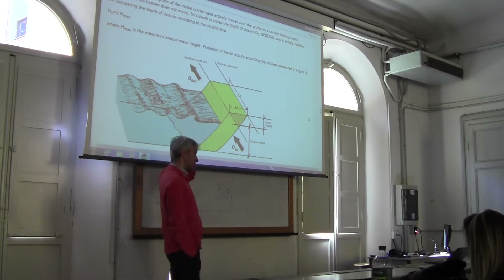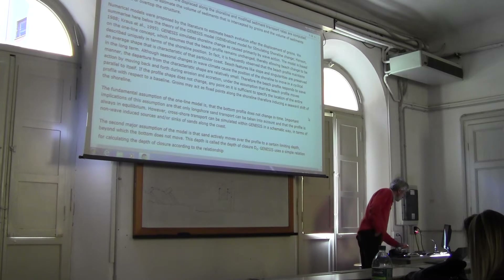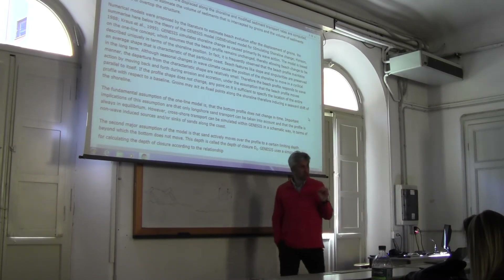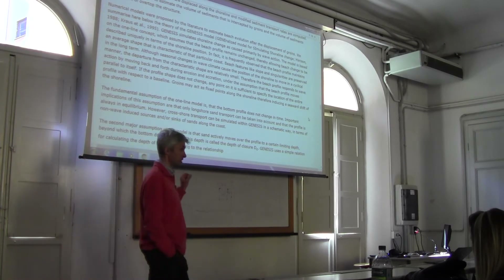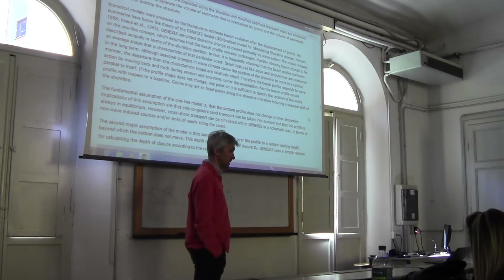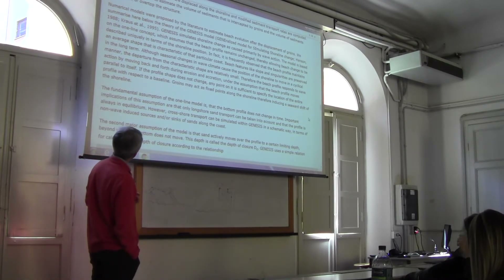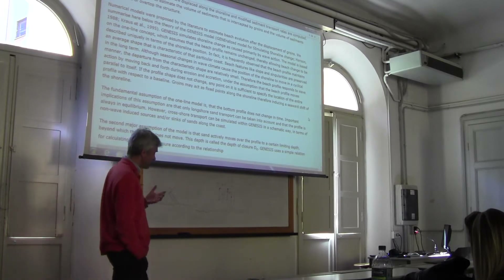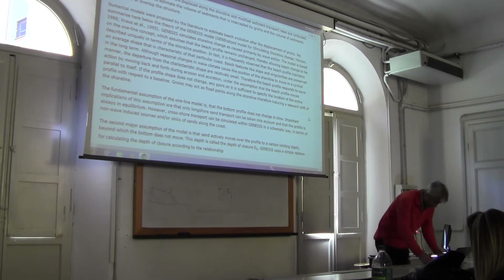So, this is the one-line model that we can apply — we have already applied it. There is indeed a well-known model called Genesis, which is used by engineers and is described in the manuals of the US Army Corps of Engineers — in particular the Coastal Engineering Manual. Genesis is also described in these manuals. Genesis basically applies the one-line model that we already discussed.